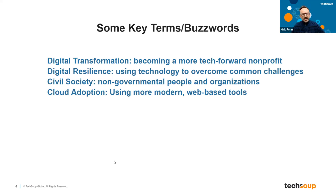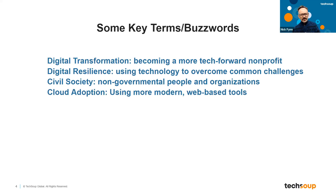Civil society is another term you'll hear from TechSoup. It's the non-governmental, non-business people and organizations engaged with the world — trying to make an impact in their community, make change, supporting people in some particular aspect. It's the common people in our effort to build a better world. Cloud adoption is pretty much a no-brainer at this point — it's just using tools embedded in the cloud, accessible through the internet, versus things loaded on a local machine. If that machine stopped functioning, you'd lose access to that data. Cloud adoption is a more resilient way of having a digital footprint for your nonprofit.